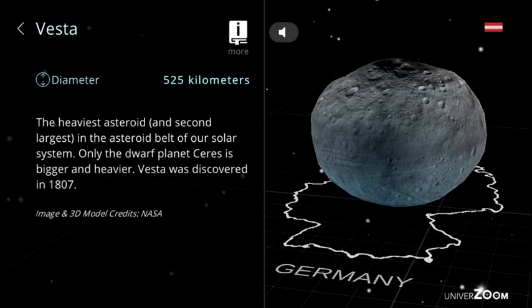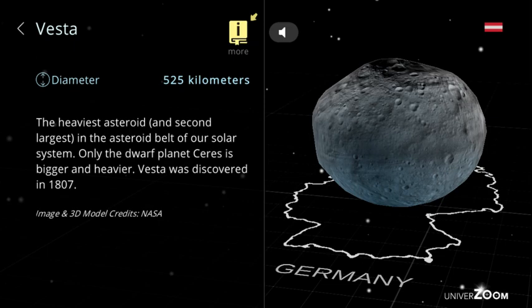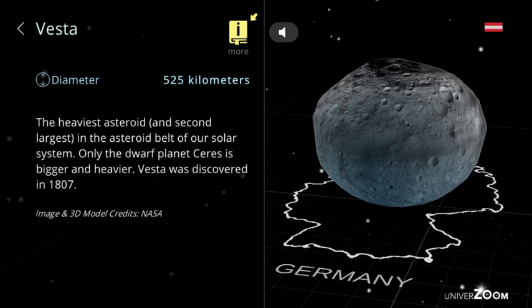Vesta, diameter: 525 kilometers. The heaviest asteroid and second largest in the asteroid belt of our solar system. Only the dwarf planet Ceres is bigger and heavier. Vesta was discovered in 1807.